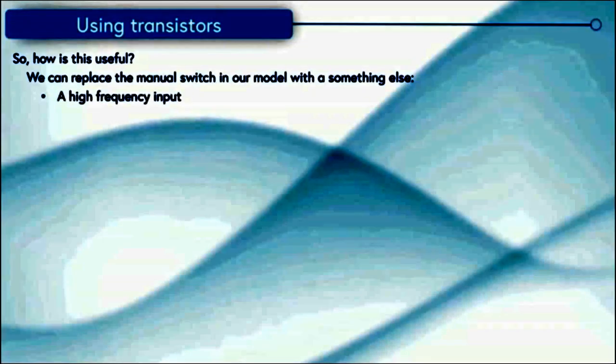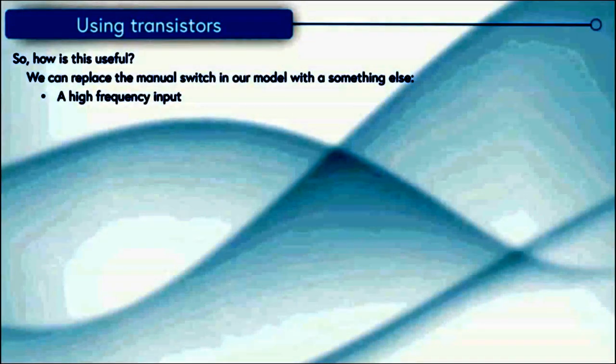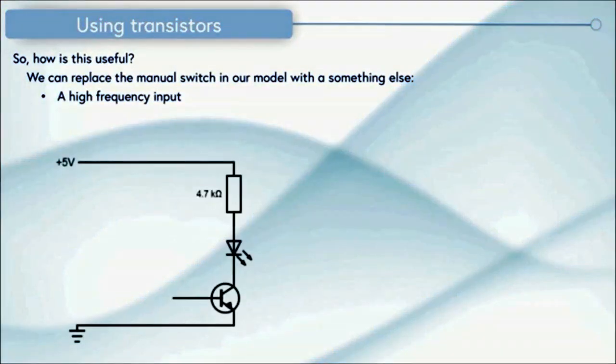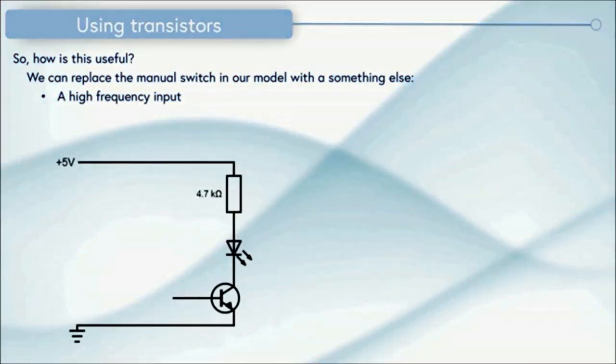Another way this is useful is we can replace the manual switch in our model with something like a high frequency input. What does that mean? Well what we're going to do is we're going to apply an input signal to the base and what I've used here is a square wave. You can see it's got periods where it's on or high and off when it's low or zero. We're going to apply this high frequency input to the base.